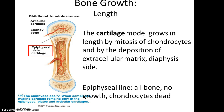Bone growth in length occurs at the epiphyseal plate, which is cartilage — referred to as the cartilage model by which the bone grows. The hyaline cartilage undergoes mitosis and the chondrocytes are slowly pushed down toward the diaphysis, so growth only occurs on the side of the epiphyseal plate facing into the shaft. As chondrocytes grow, they eventually form the normal extracellular matrix expected for bone, which calcifies. The chondrocytes die and are replaced by osteoblasts that become osteocytes. When you become an adult and no longer need length growth, the cartilage is replaced with bone tissue.